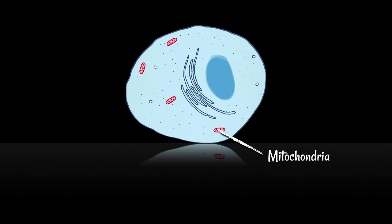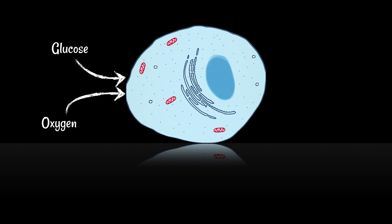animal cells as well as plant cells in little organelles called the mitochondria. Glucose is provided by your food and oxygen is provided through breathing. A whole series of complex chemical reactions take place, but the result is carbon